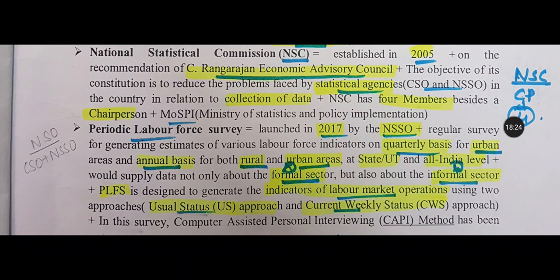The National Statistical Commission was established in 2005 on the recommendation of C. Rangarajan's Economic Advisory Council. Its objective is to reduce the problems faced by statistical agencies like CSO and NSO in collecting data. The NSC has four members besides a chairperson and functions under the Ministry of Statistics and Programme Implementation.